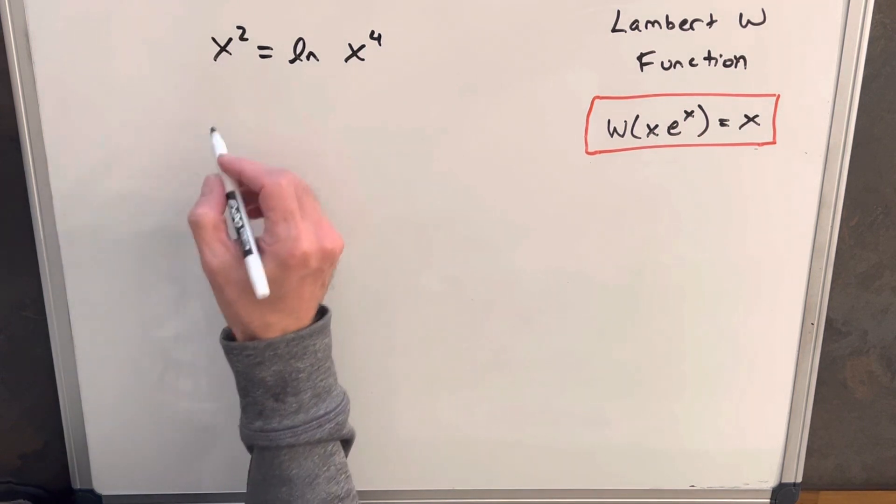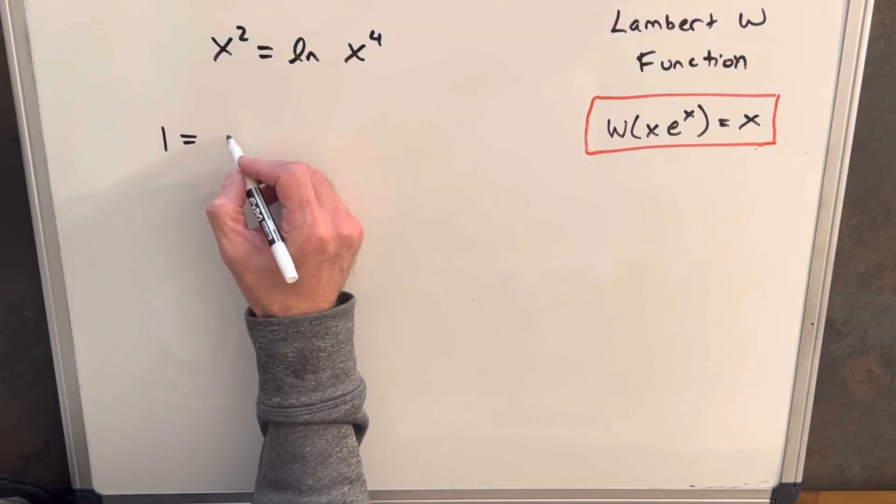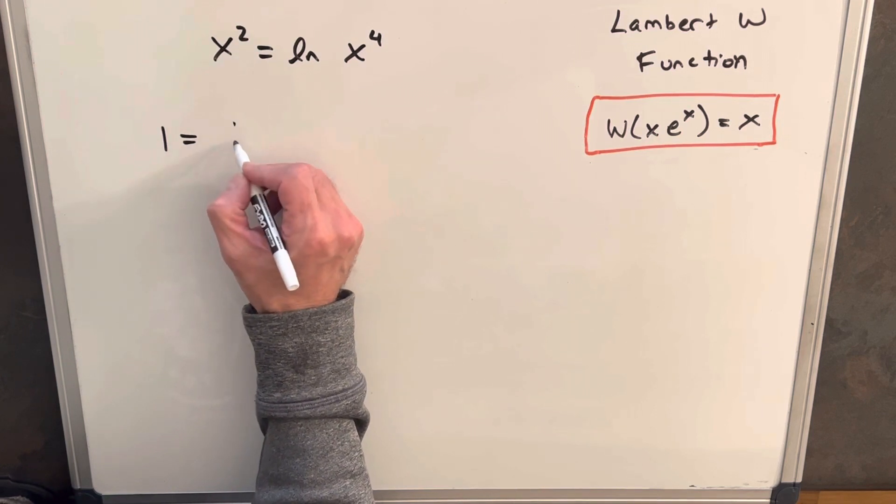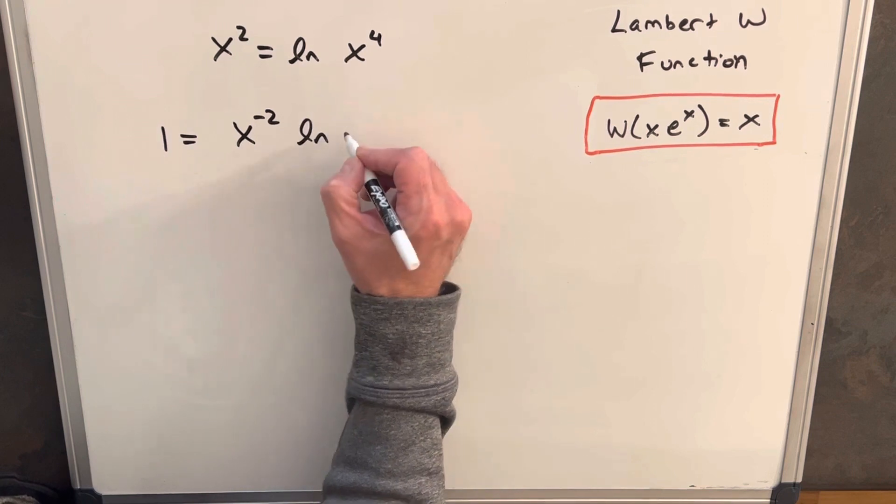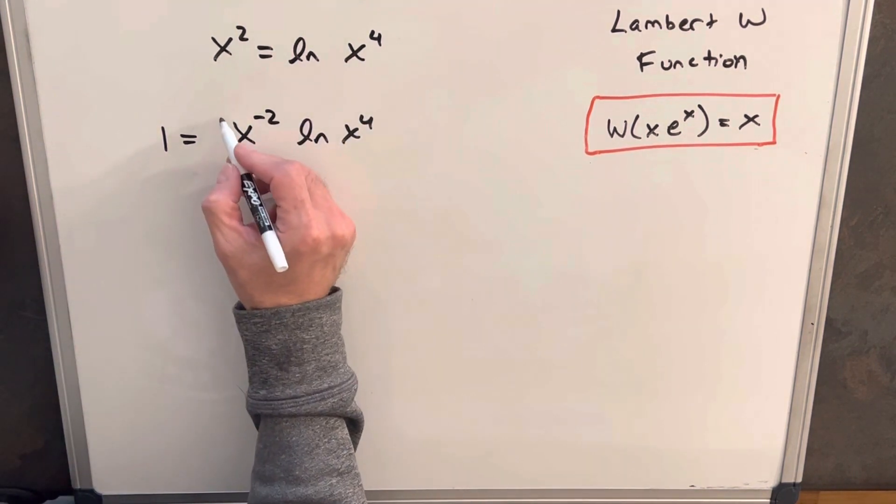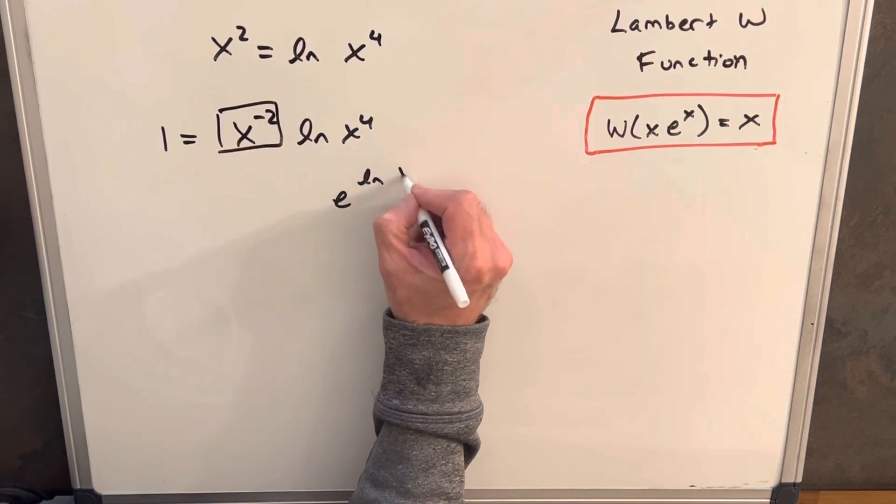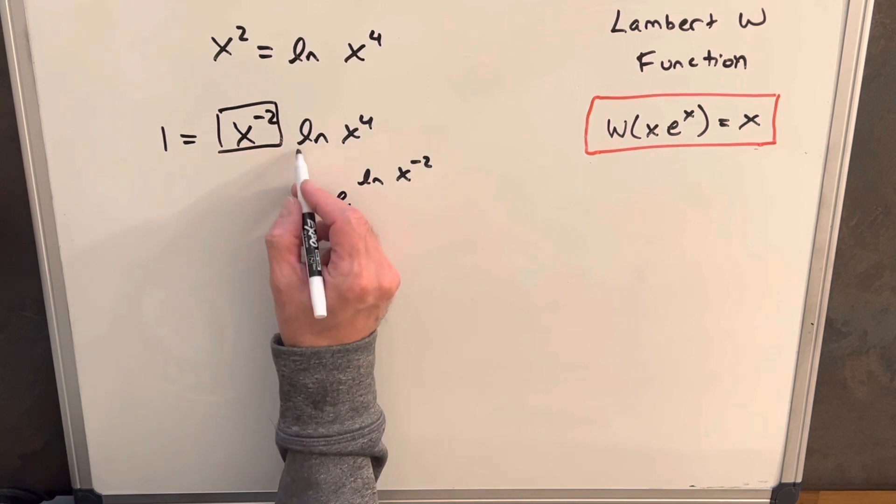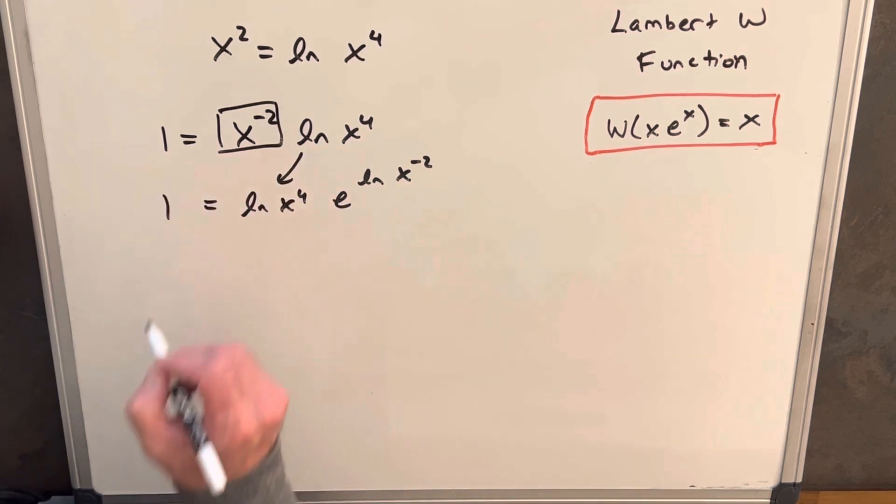What I can do is divide both sides by x squared, and then on the left side we'll have a 1. When I divide on the right side, we're going to write this as x to the minus 2 power ln x to the fourth. And that's going to allow me to create the e, because we'll focus on just this term, and we'll rewrite that as e to the ln x to the negative 2. We'll move our ln x to the fourth over here, and that's going to equal 1.